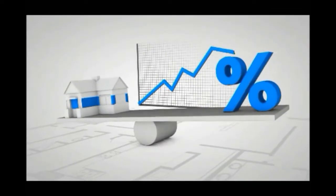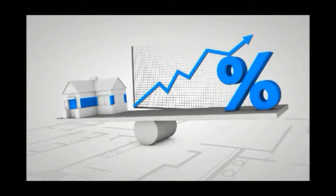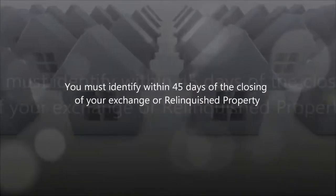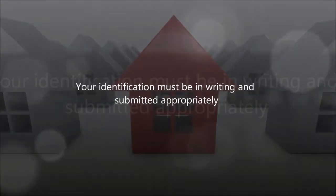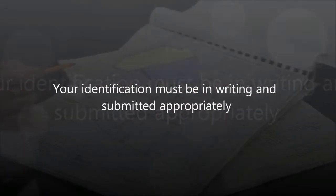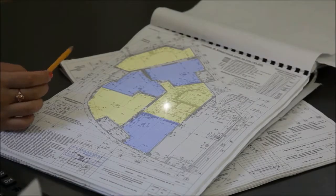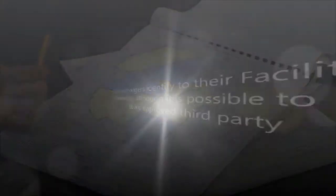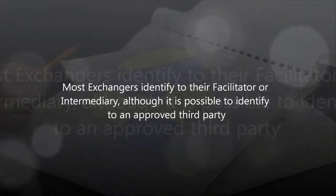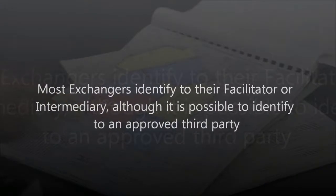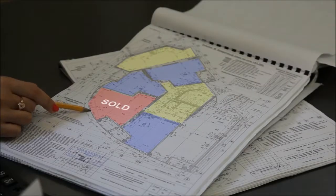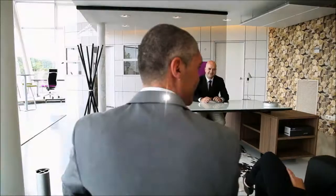Let's recap identification a little bit. First, you must identify within 45 days of the closing of your exchange or relinquished property. Also, your exchange must be in writing and submitted in a timely manner. Most exchangers identify to their facilitator, but it is possible to identify to an appropriate third party, and the rules for those parties are listed elsewhere under identification rules.